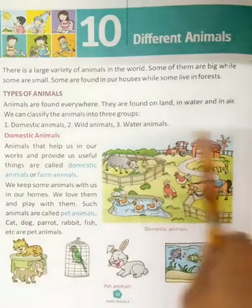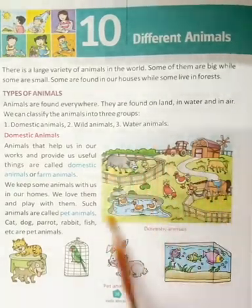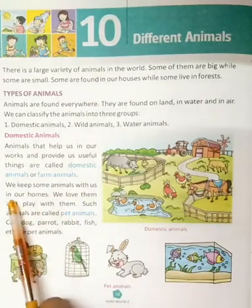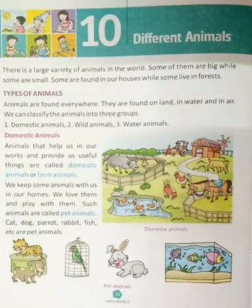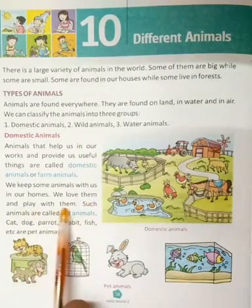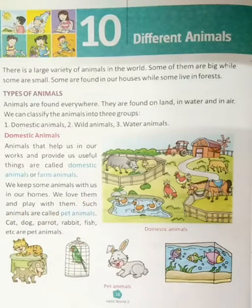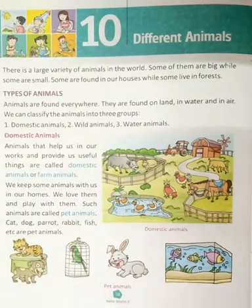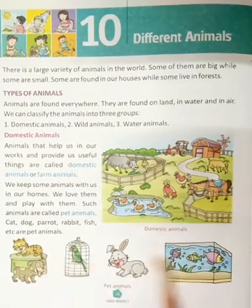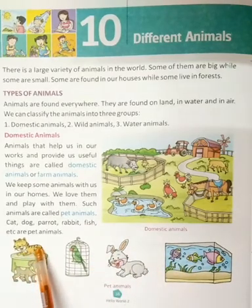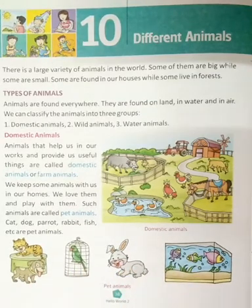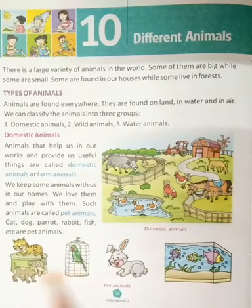We keep some animals with us in our homes. We love them and play with them. Such animals are called pet animals. Examples include cat, dog, parrot, rabbit, fish, and more.